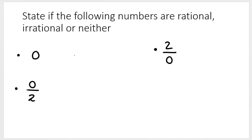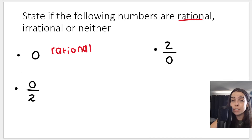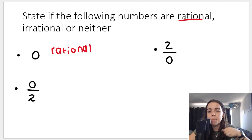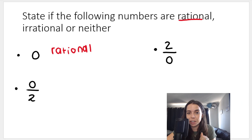What about zero? Zero is a rational number. Not only is it rational, it can also be included as an integer. It can be considered a whole number — remember, whole numbers start from zero. It's not a natural number though.